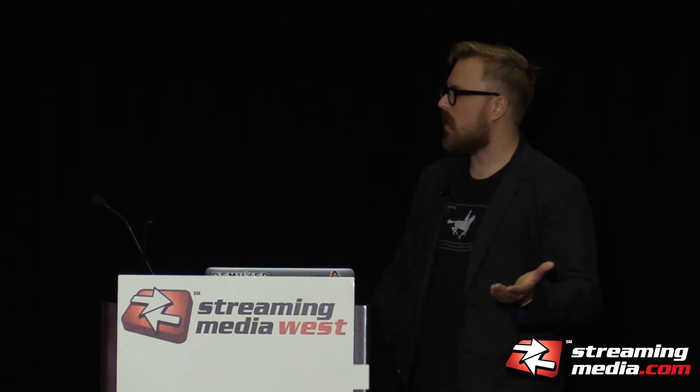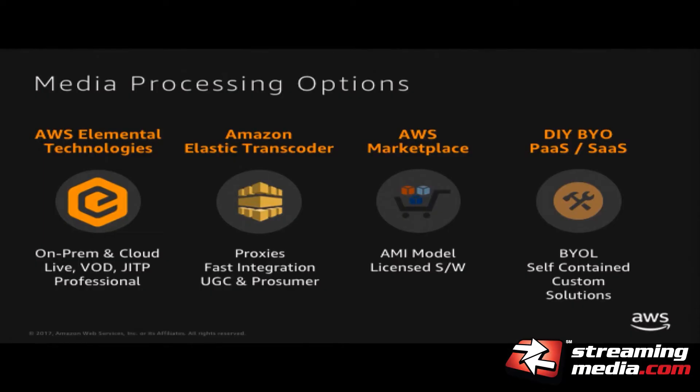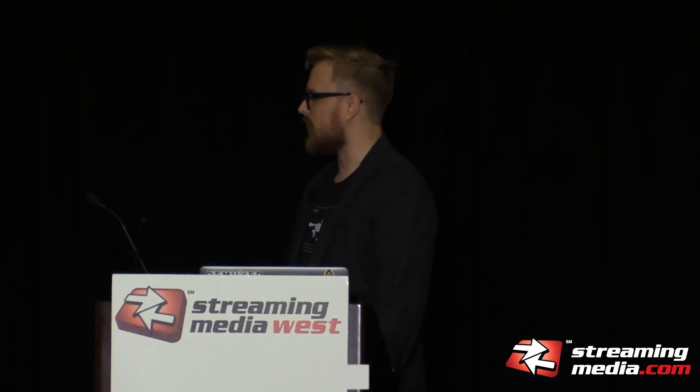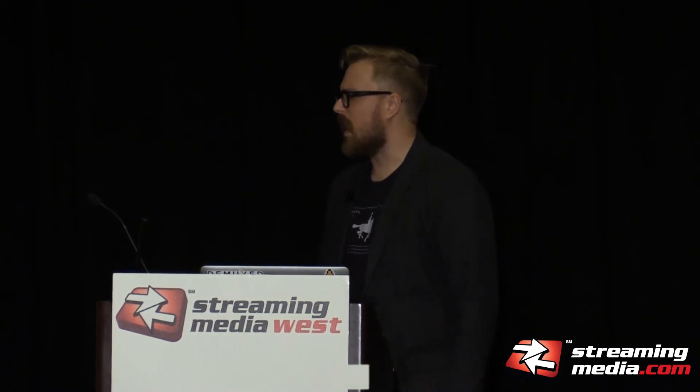Once we get it to the cloud, there are a few options for processing. We can use AWS Elemental to transcode with Elemental Live. For video on demand, we can use Elastic Transcoder. There are plenty of options in the AWS Marketplace for encoding and distribution products like Wowza and Bitmovin and things like that. Or we can build it ourselves using traditional EC2 infrastructure. There's a whole plethora of options here.